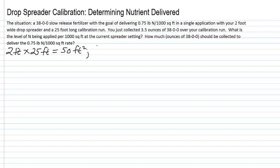Now we're going to use some proportions, and remember that in proportions as long as you match what the units are on the top with the units that are in the bottom we can proportion anything. Here we're going to use some information that we have in our problem. We know that we've just collected 3.5 ounces of 38-0-0 over a 50 square foot area.